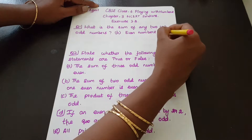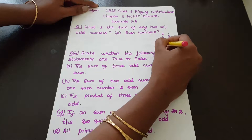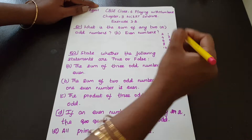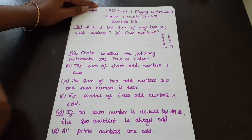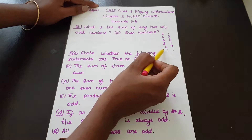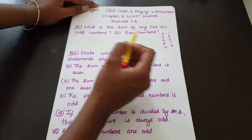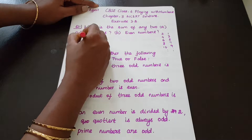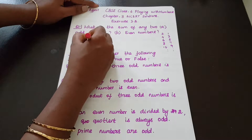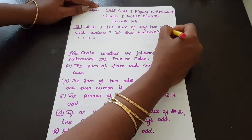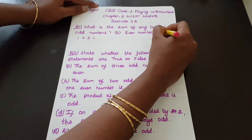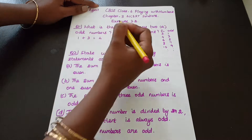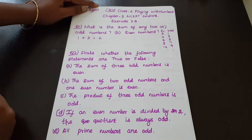Even numbers are 2, 4, 6, 8, 10 and so on. Now, any two odd numbers: 1 plus 3. That gives us 4. So, 4 is an even number.